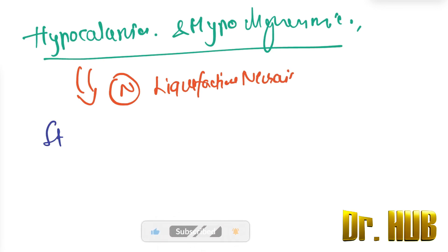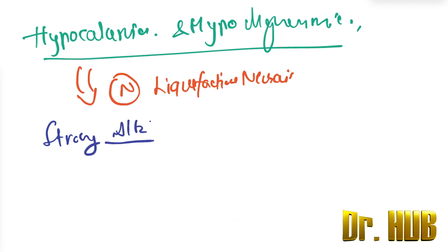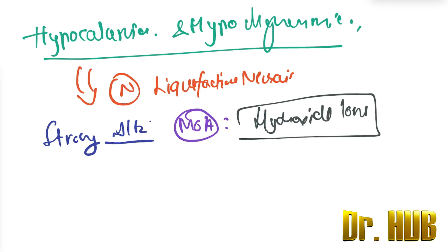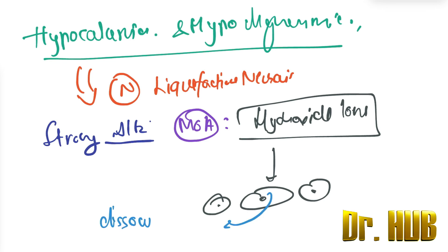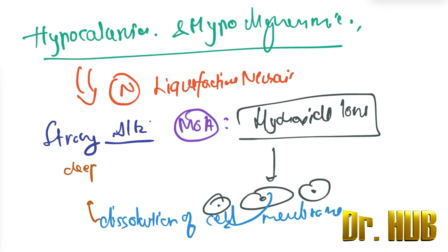Next we look at strong alkalis. The mechanism of action is that hydroxide ions easily penetrate the tissues, leading to dissolution of the cell membranes. This is associated with deep tissue injury. The type of necrosis is liquefactive necrosis.